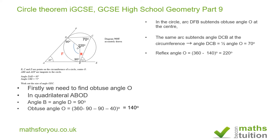We now need to work out the size of this angle. We know that angle OBE is 90 degrees, because OB is a radius and ABE is a tangent. So the angle OBC then becomes 90 minus 75 degrees, and that gives us 15 degrees.